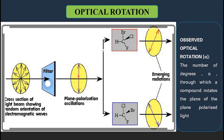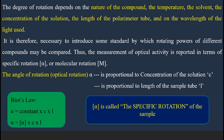The observed angle of rotation depends upon the nature of the compound, rotation temperature, the solvent used, most importantly the concentration of the solution, the length of the polarimeter tube (sample tube, which we call the cell), and the wavelength of the light used.